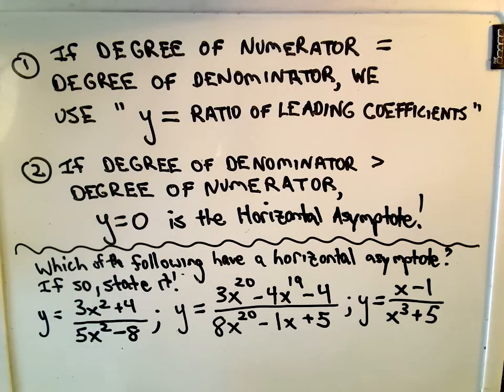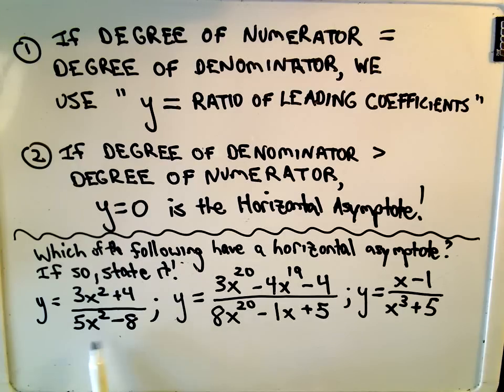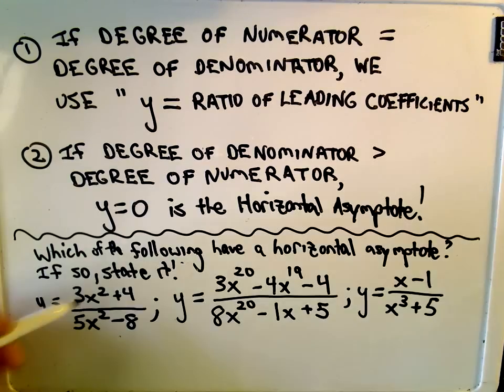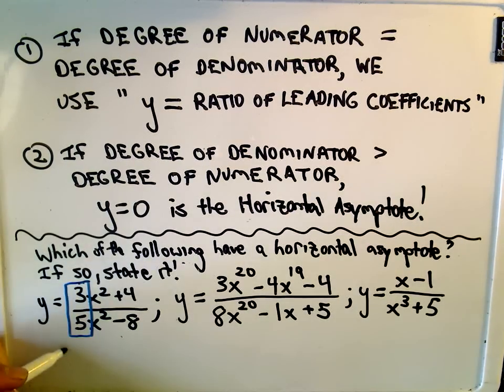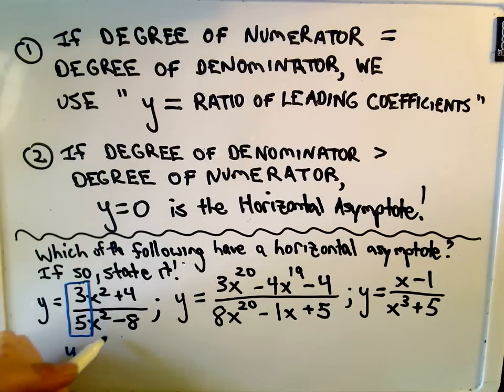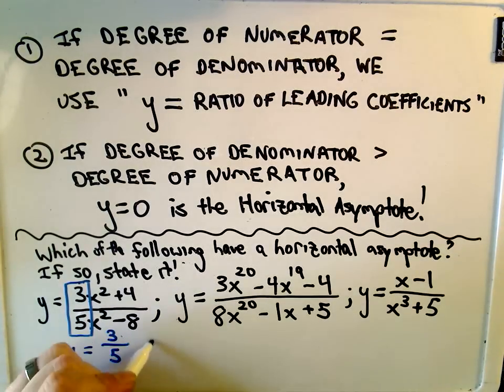So, let's look at the first example. It says, which of the following have a horizontal asymptote? If so, let's state it. Well, notice the degree of the numerator is two, because of the x squared, the degree of the denominator is also x squared. All we have to do is take the ratio of their coefficients, and it says the horizontal asymptote is going to be the line y equals three-fifths. Easy enough.